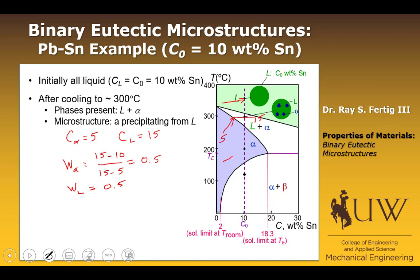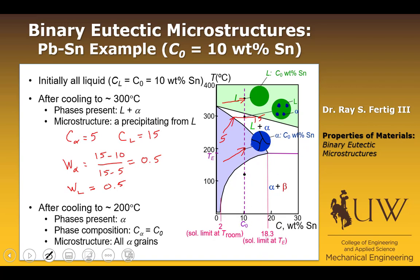When we cool to about 200 degrees C, it's exactly what we had in the previous case when we cooled into the pure alpha region. We have only alpha. The phase composition of the alpha is 10 weight percent tin, which is our system composition. The microstructure is all alpha grains.